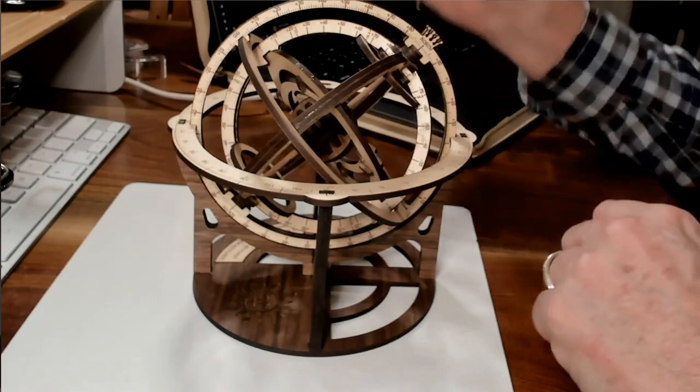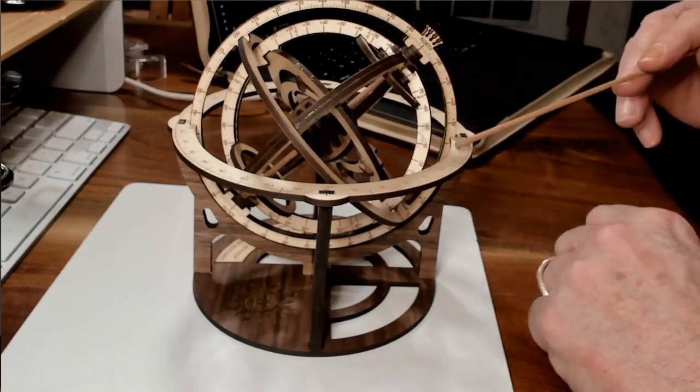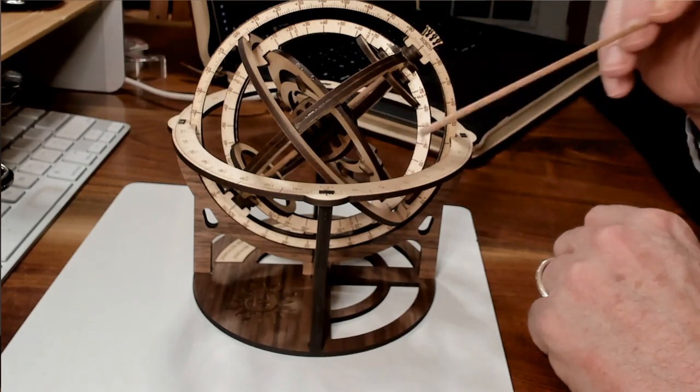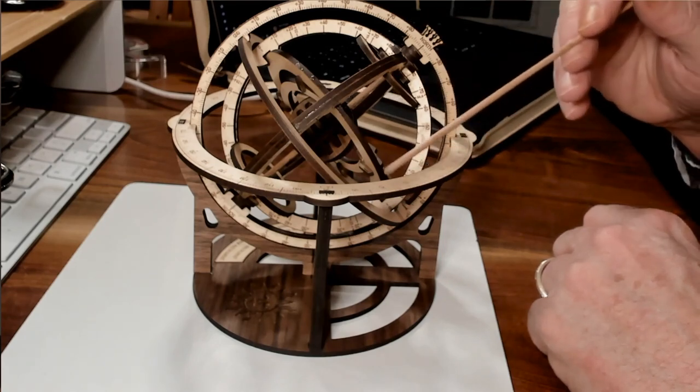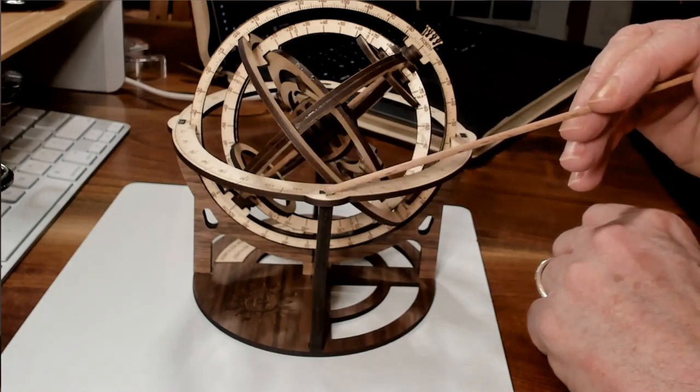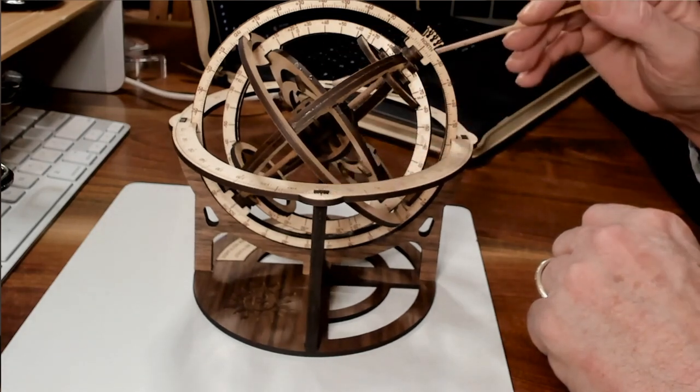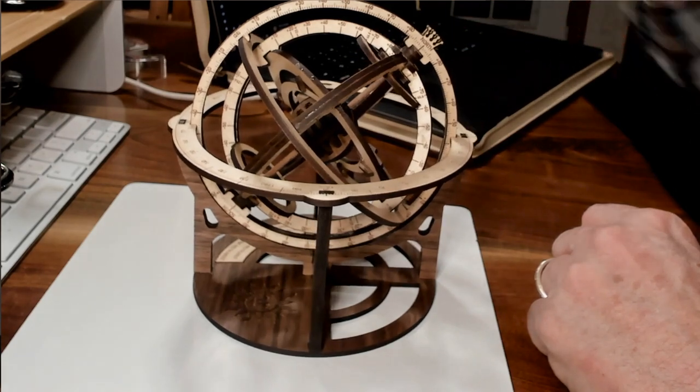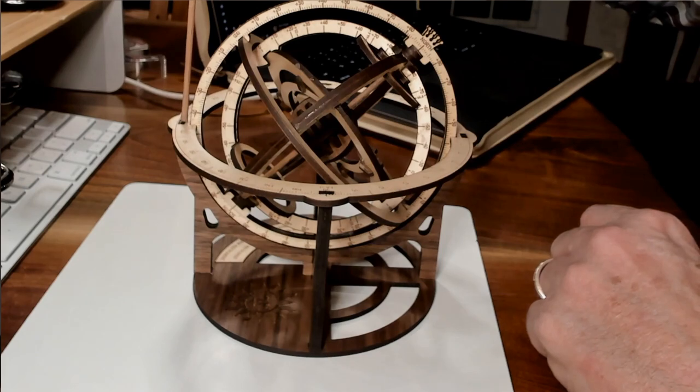Now let's identify the parts. This outer ring will be our horizon and on the ring it has azimuths. So east would be located here and that's 90 degrees. On the opposite side we have west. This is north at zero degrees and this is south at 180 degrees.